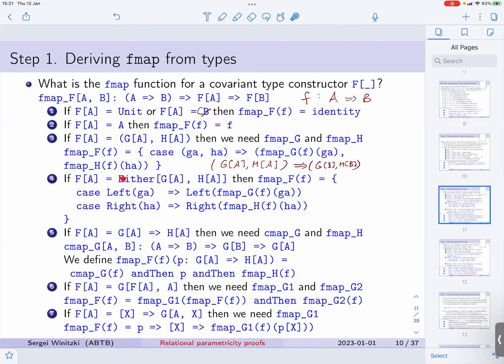The next case is Either. We have Either (g of a) (h of a) and we need to map this into Either (g of b) (h of b). We define this by cases: Left goes to Left, Right goes to Right, and we just use FMAP g and FMAP h each time.